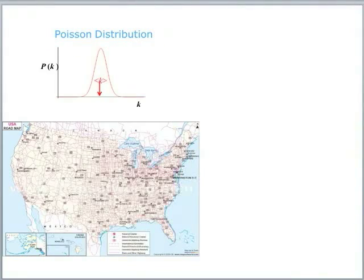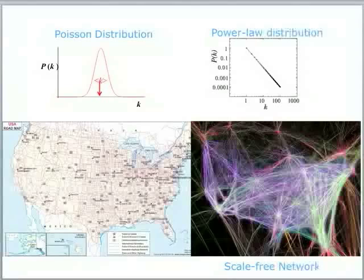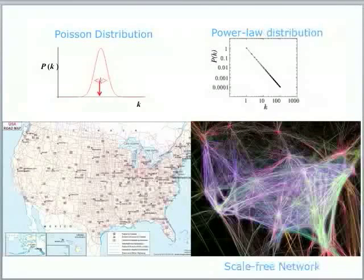Something which is scale-free, which is given by a power law distribution, is more like the network of airline links between cities. Not every town has got an airport. It's only big hubs.